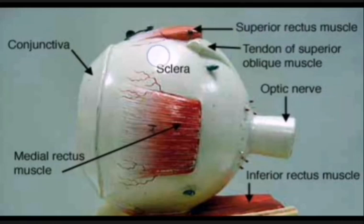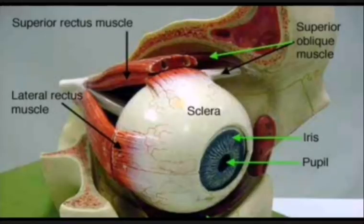Here is the superior rectus muscle, and the whitish bulging part is the tendon of the superior oblique muscle. This is the superior oblique muscle. Now we are moving towards another picture of the model.